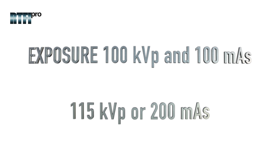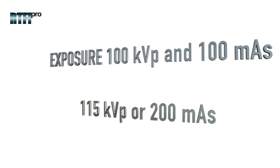Practically speaking, if we had an original exposure x-raying a weld with a beam intensity of 100 KVP and 100 milliampere seconds, with a 15% increase in KVP it would be equivalent to 115 KVP or 200 milliampere seconds.